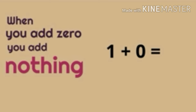That is why one plus zero is equal to one. Because zero does not have any number value, that is why one plus zero is equal to one.